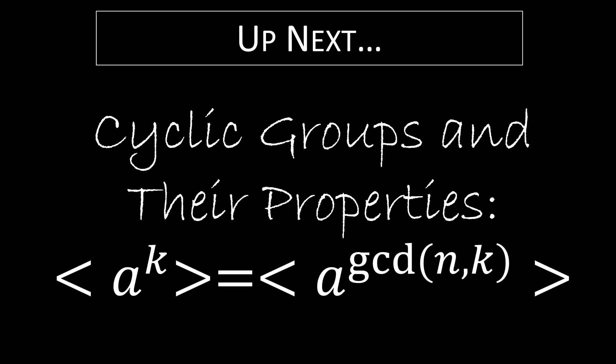Up next, we're going to look at the other main theorem in this section, which is that the cyclic subgroup generated by A to the k is the same as the cyclic subgroup generated by A to the greatest common divisor of n and k.